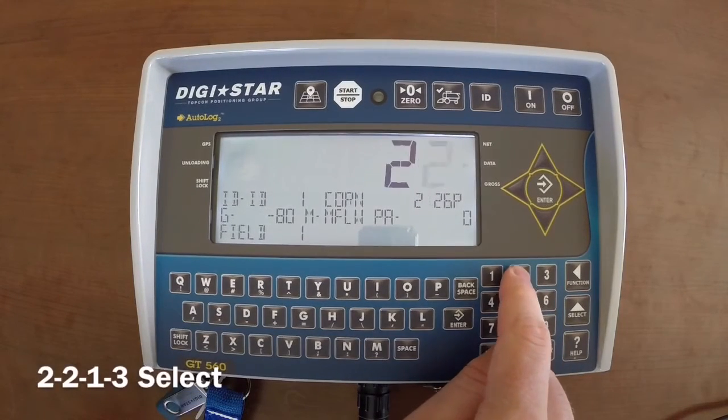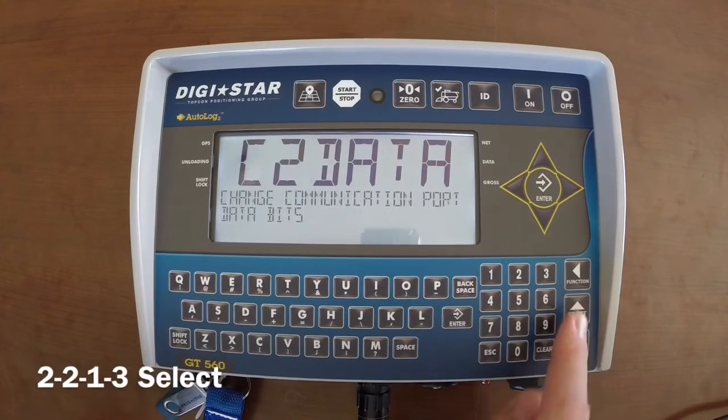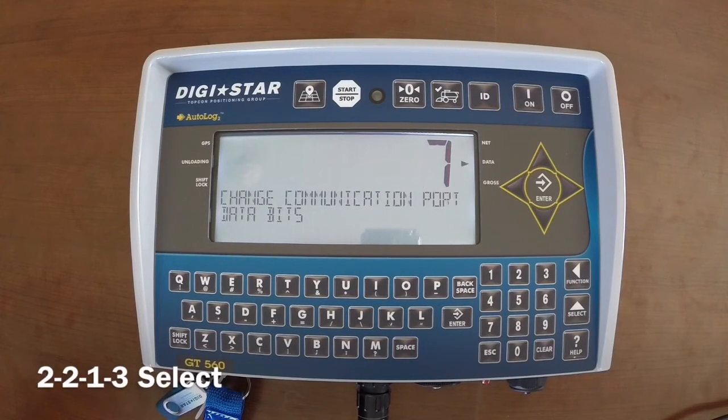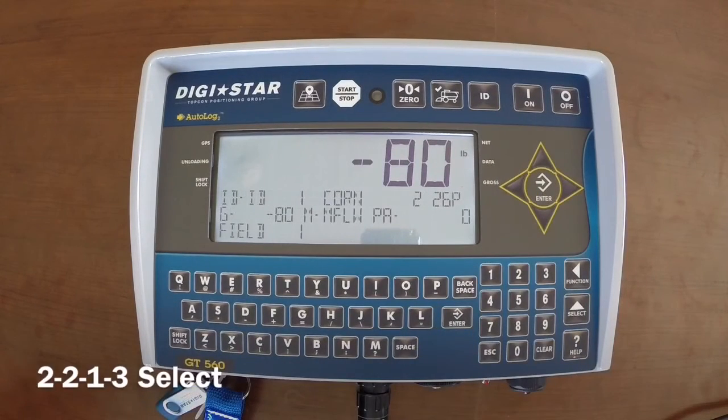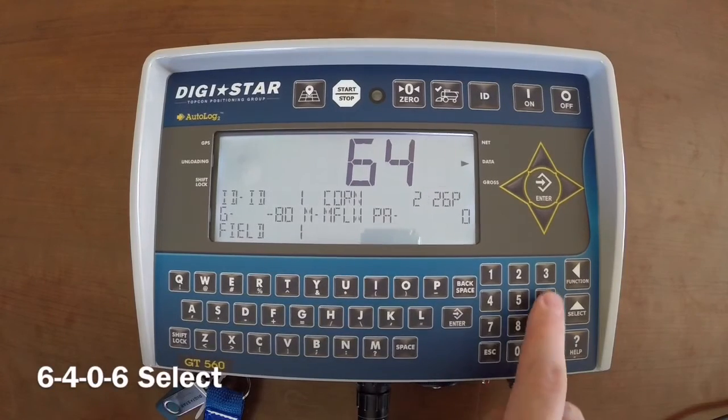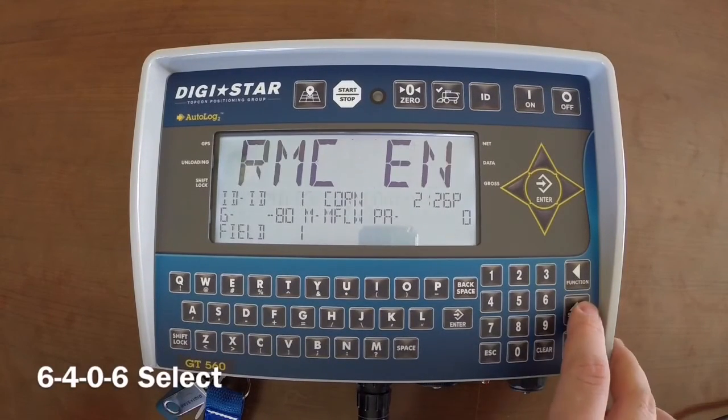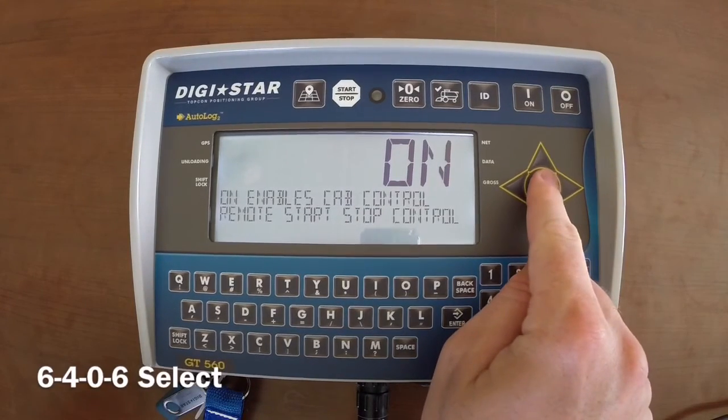Type in 2201 and then the select button. This setting will allow you to utilize the app should your PTO sensor fail. Turn this to on and then hit the enter button.